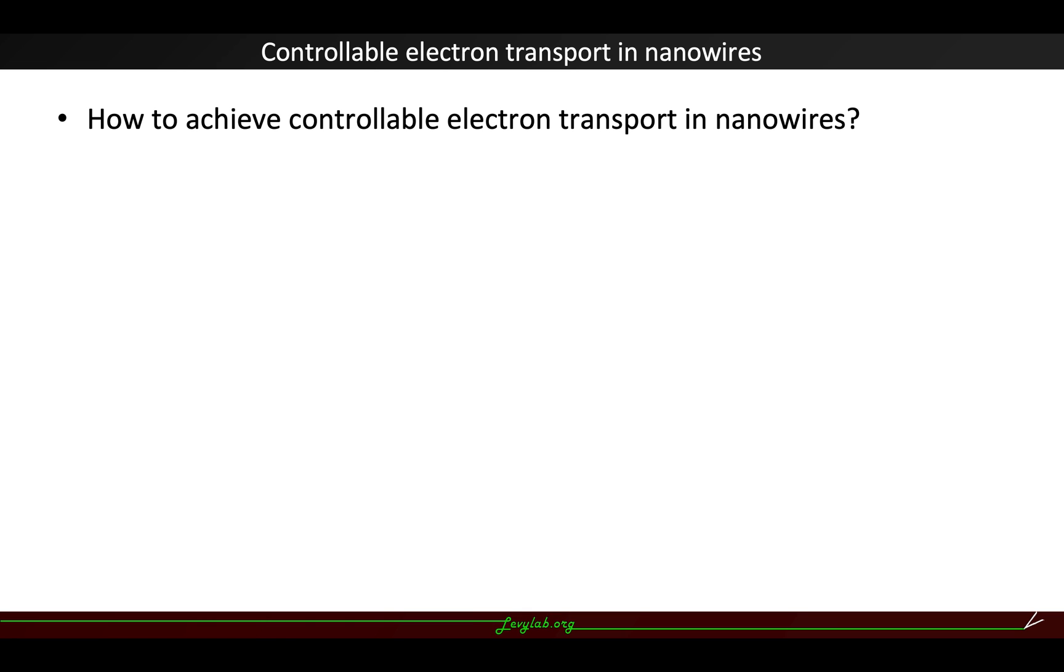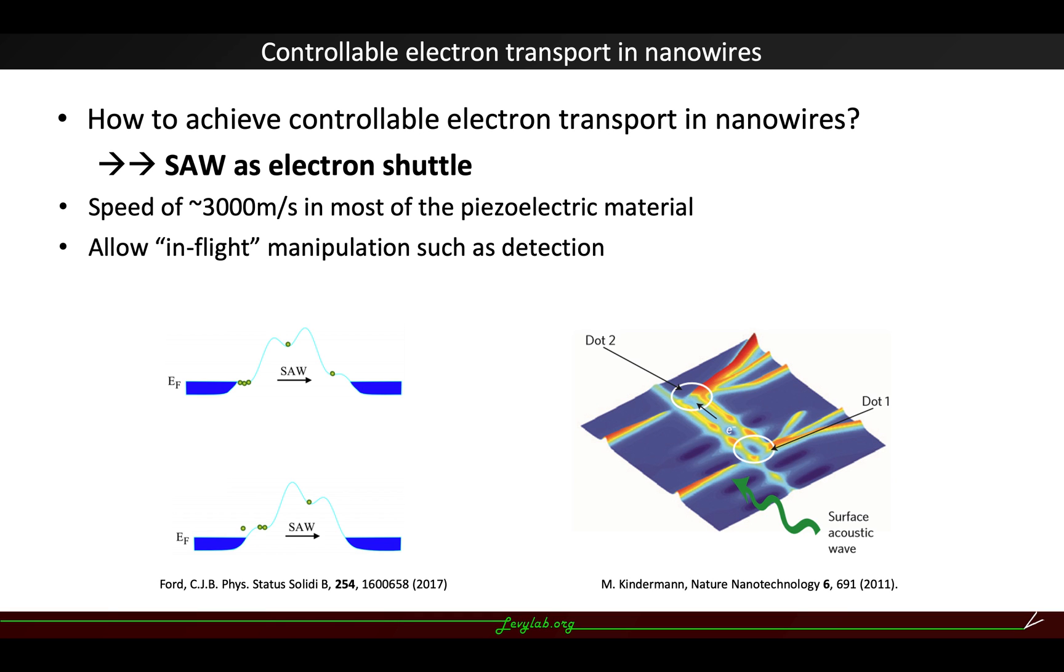how to achieve more precisely controllable electron transport in the nanowires. And I would like to introduce surface acoustic wave as a method, since surface acoustic wave can act as an electron shuttle.